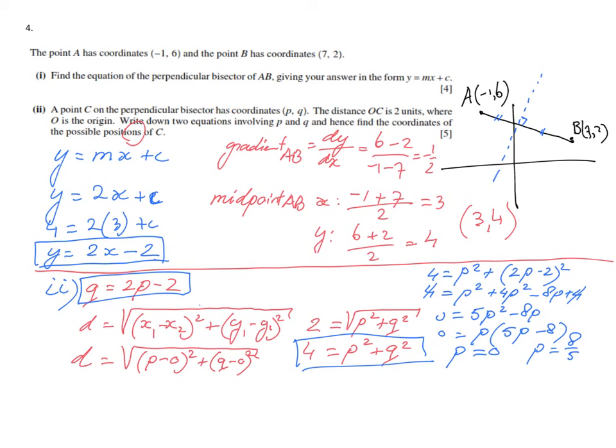Those are the x-coordinates. P is the x-coordinate. So we still have to find the corresponding y-coordinates. When P is 0, let's take this equation to find Q. 2 times 0 minus 2 is -2. So the coordinate for that possible outcome is (0, -2). For the other one, P is 8/5. Plug that in: 2 times 8/5 is 16/5 minus 2. So 16/5 minus 10/5 is 6/5. There we go. The two possible positions of point C.